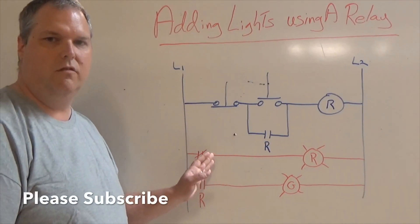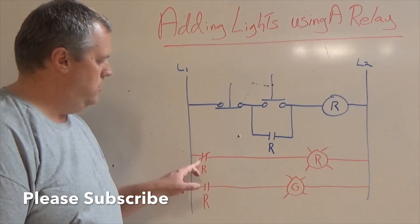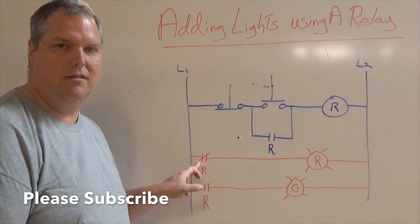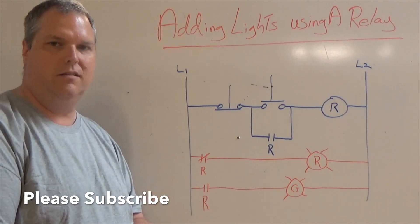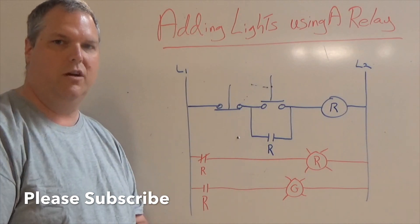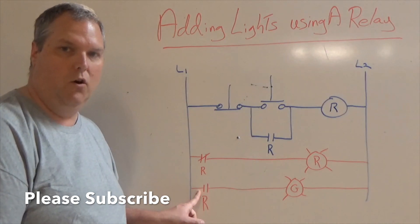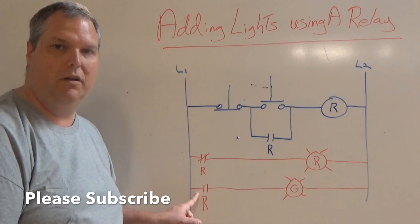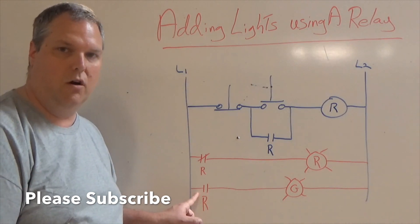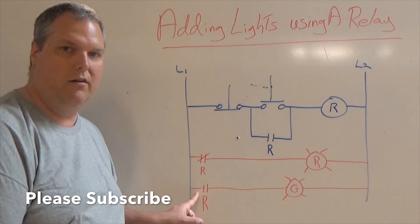When we look at this ladder diagram here, you can see we have a normally close contact. The normally close contact is going to be found on the 8-pin relay, which I will show you in a second. I also have a normally open contact that's also on my relay, and I'm going to show you how to wire that.